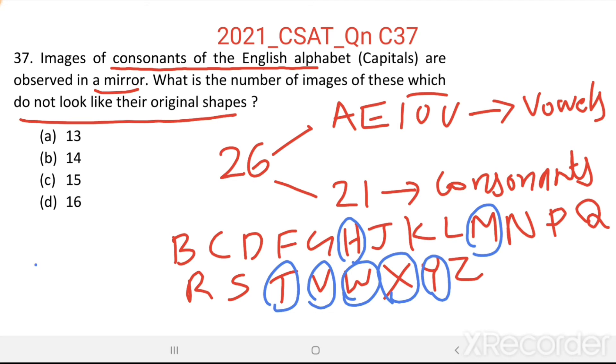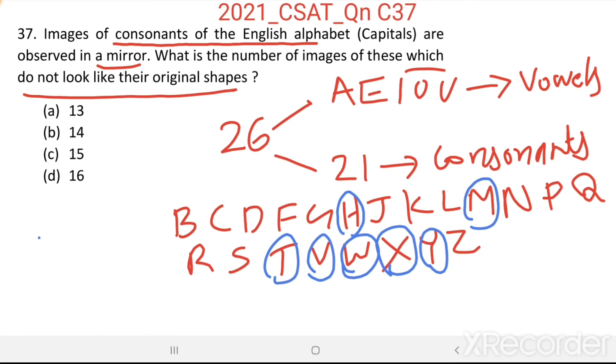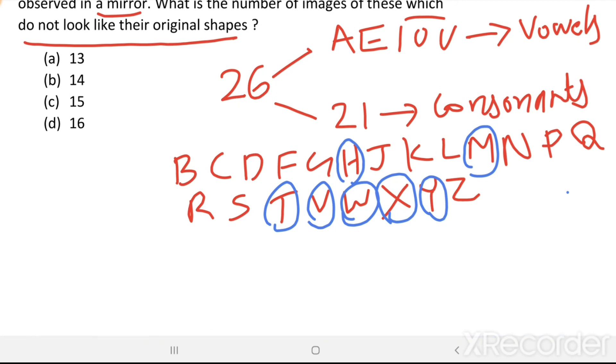Then consonants which do not look like their original shapes in the mirror image are 21 minus these seven letters. We get 14.